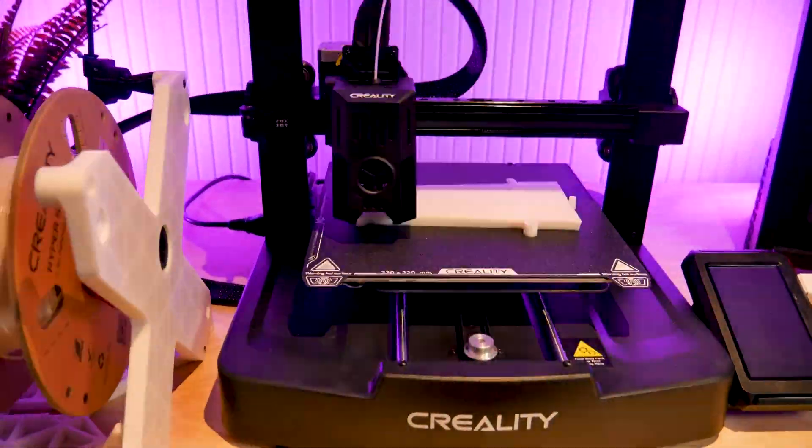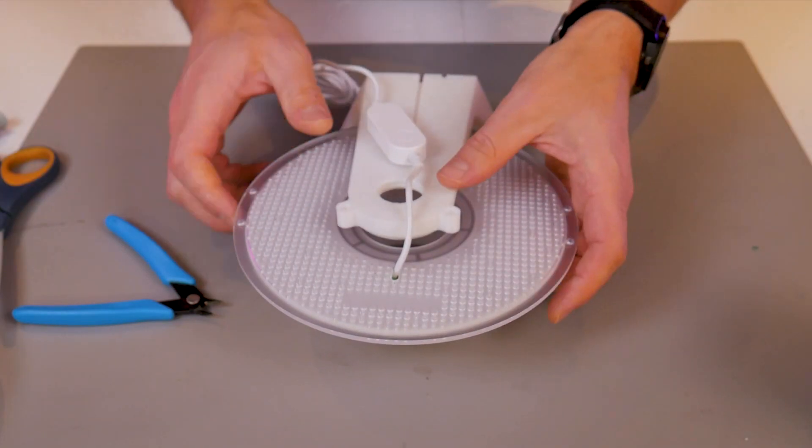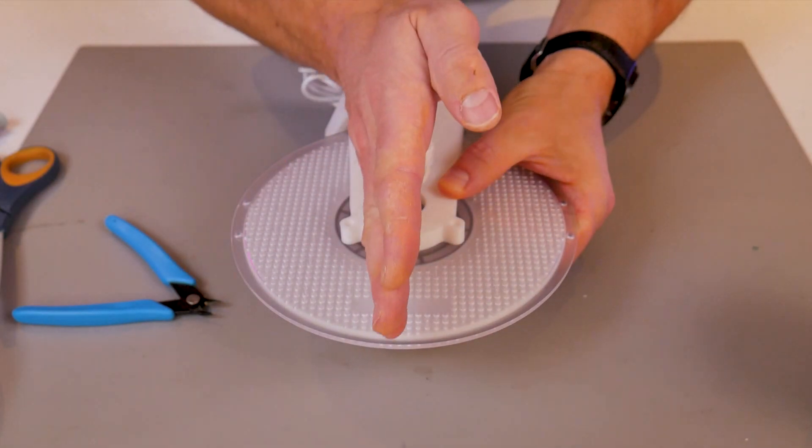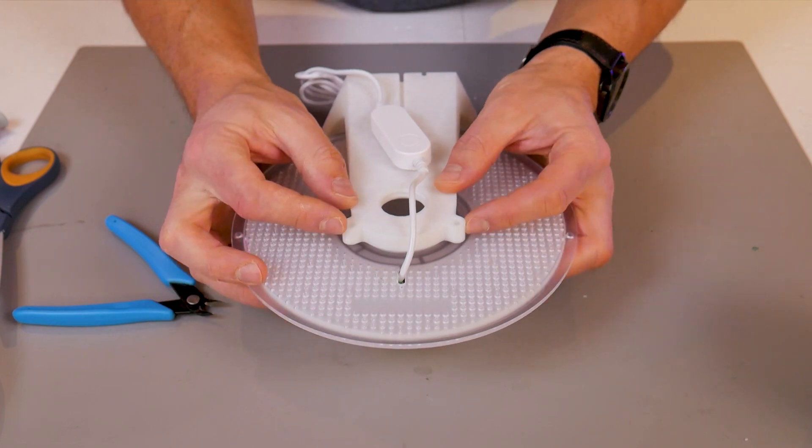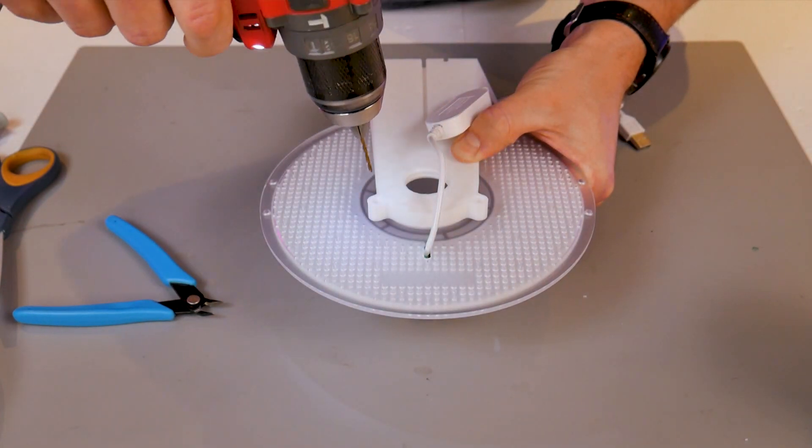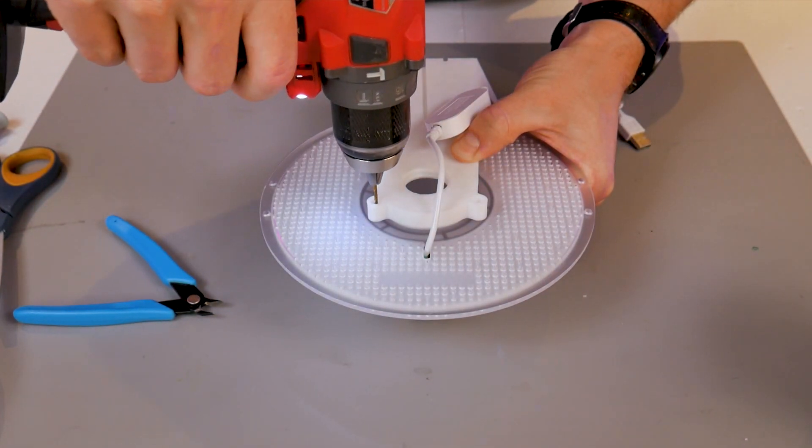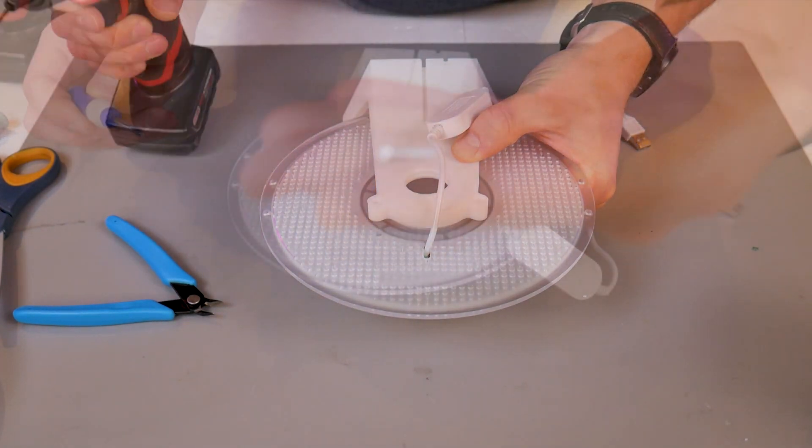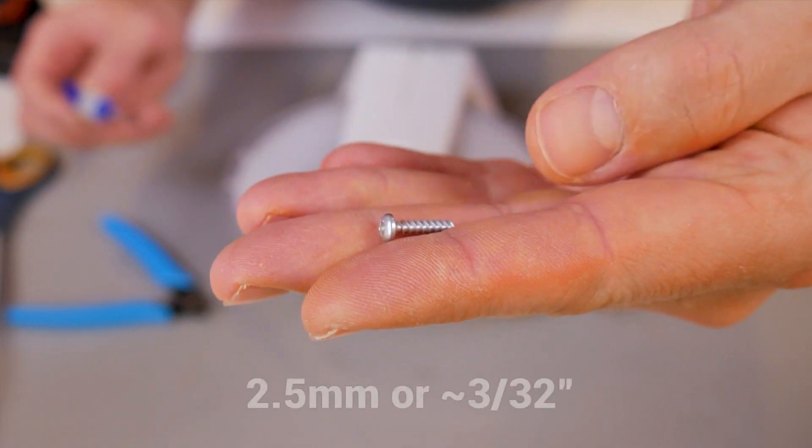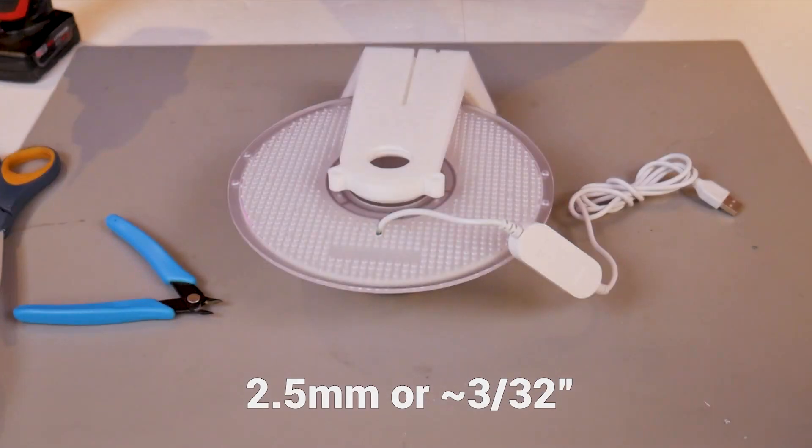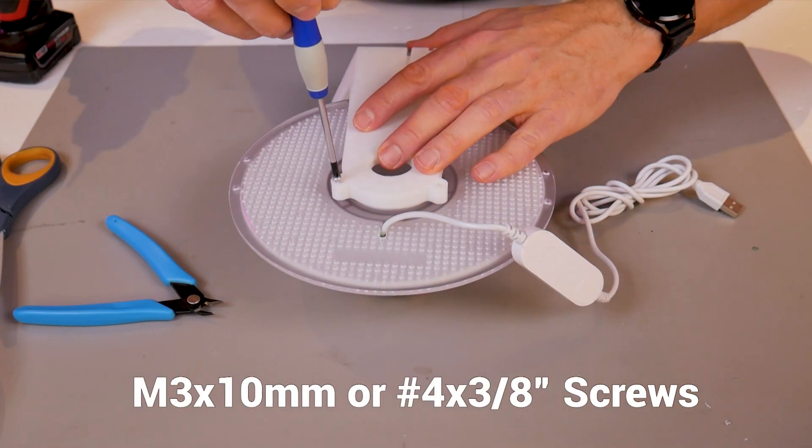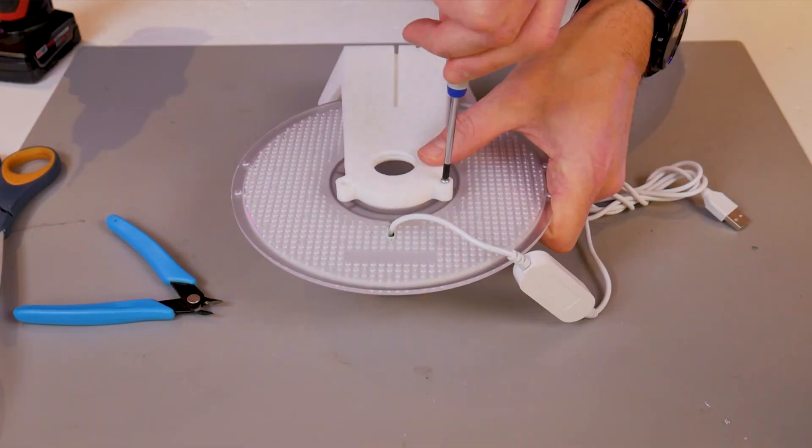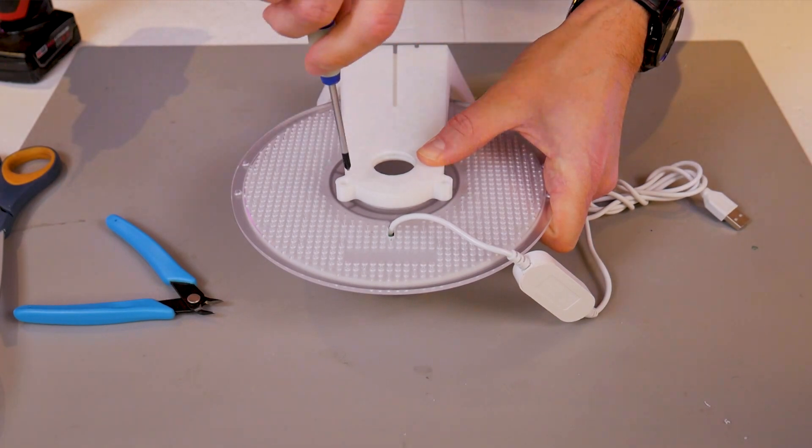Then we can print the stand, and this is what's going to get attached to the back of the spool. You'll want to align it as straight as possible so that the wire is at the top, and you can use the holes in those features that look like ears as drill guides. You'll want to drill two 2.5 millimeter holes. We're going to be using these M3 by 10 self-tapping screws to secure the stand in place.